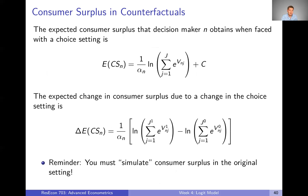When simulating counterfactuals, we want to know how consumer surplus is changing. We use the expected consumer surplus expression and take the difference between the counterfactual and the observed setting: it's just the log-sum term in the counterfactual minus the log-sum term in the original choice setting, all scaled by alpha. That tells us how utility changes in expectation between the two settings, converted to money instead of utility units.